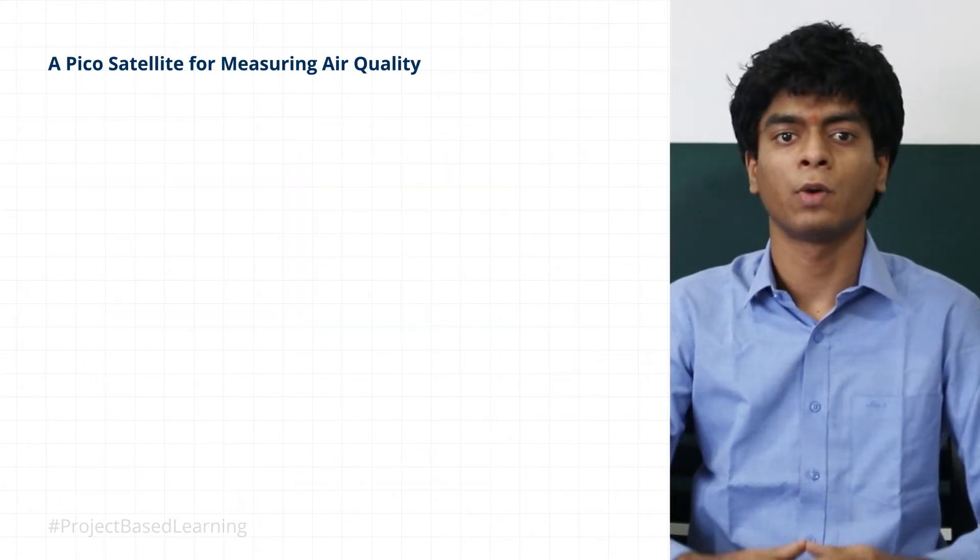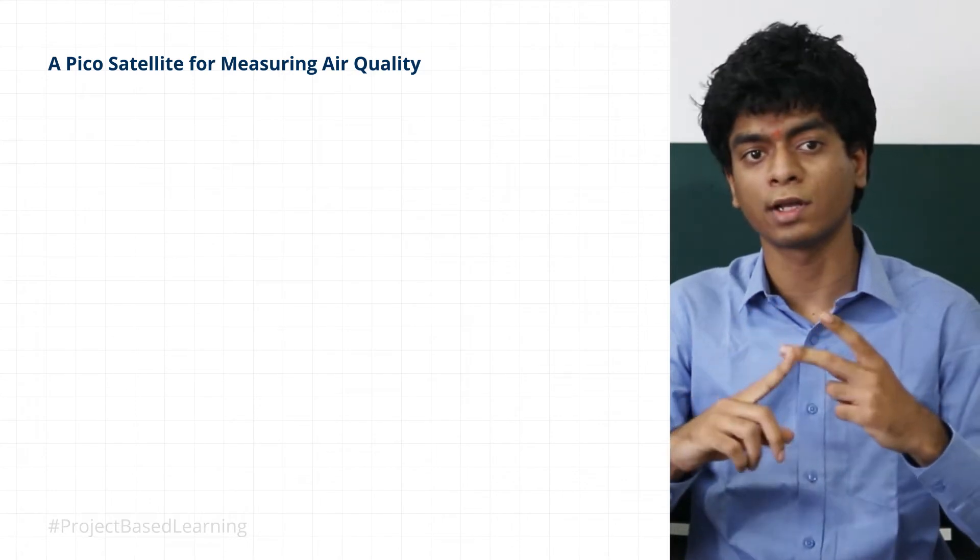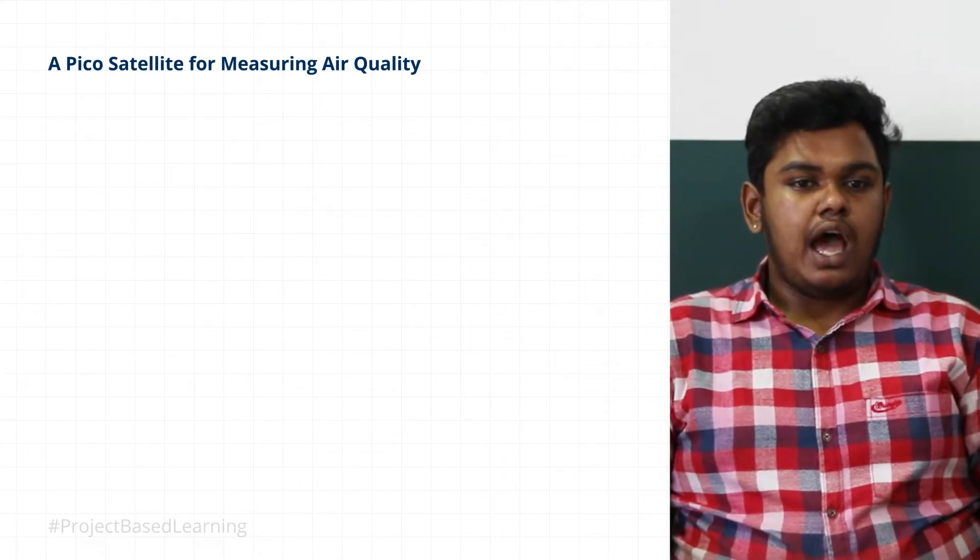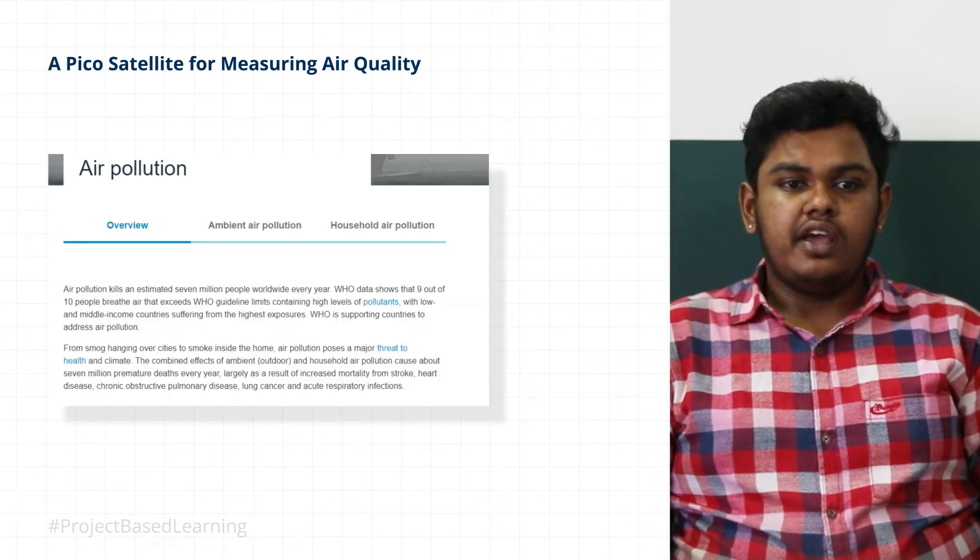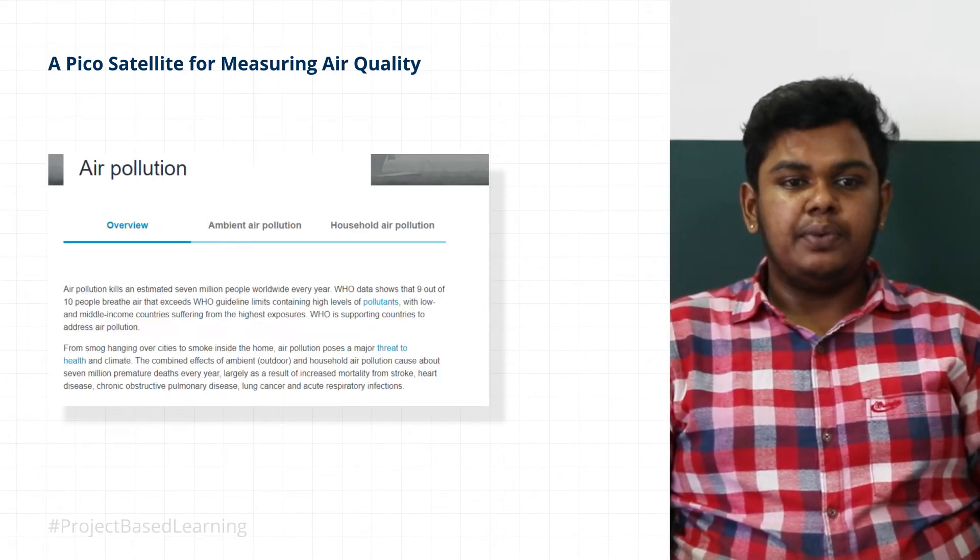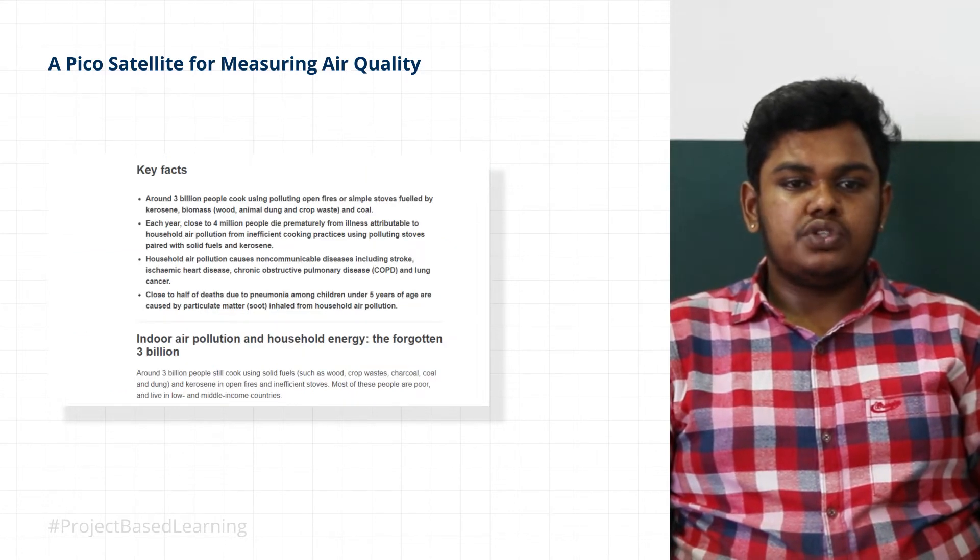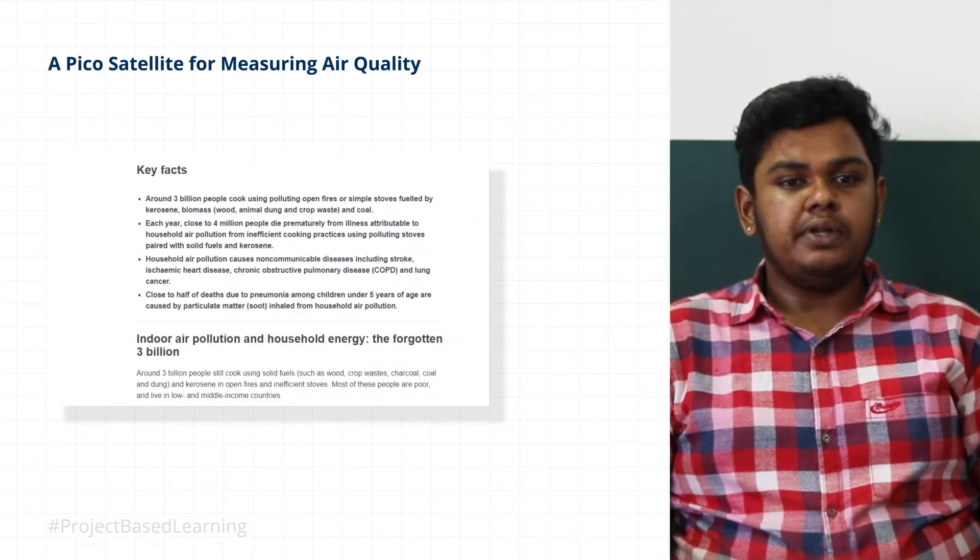Discussing the problem statement, we came up with air quality and weather as our parameters. We had two main reasons for choosing air pollution. Every year more than 7 million people die worldwide due to air pollution. Data from WHO shows that 9 out of 10 people breathe polluted air.